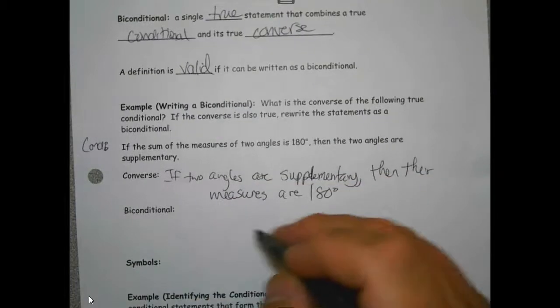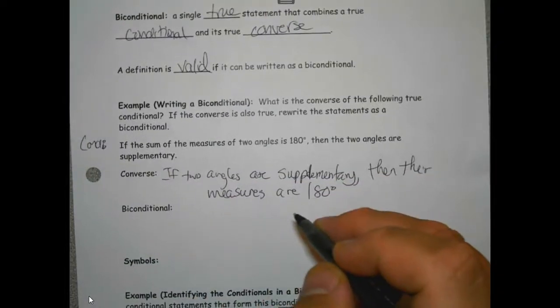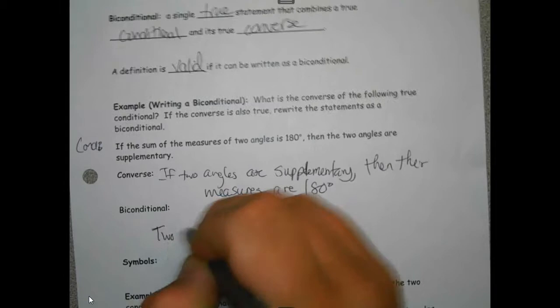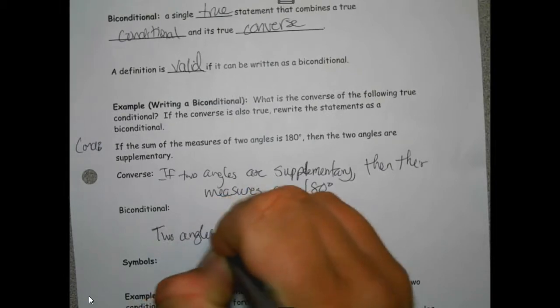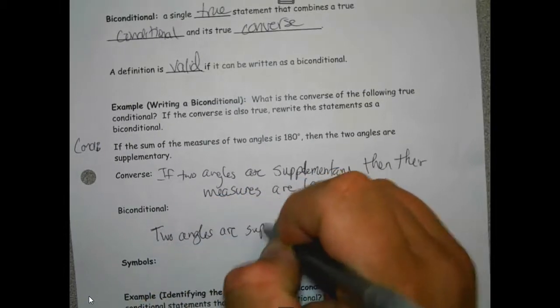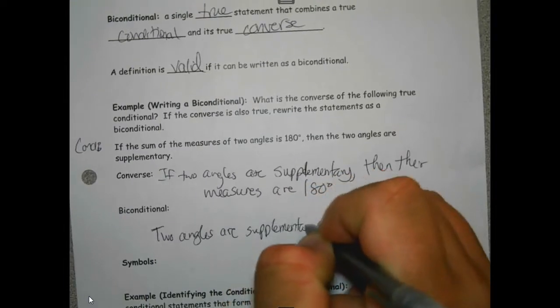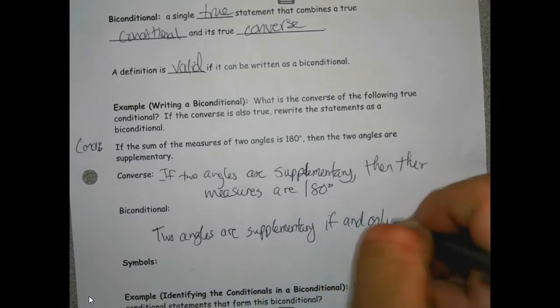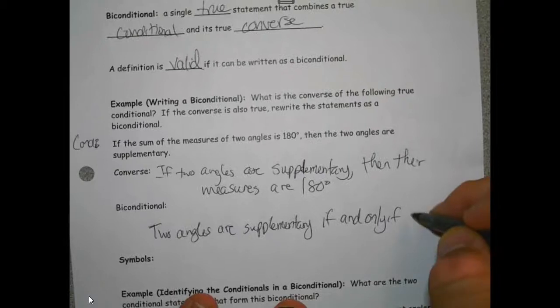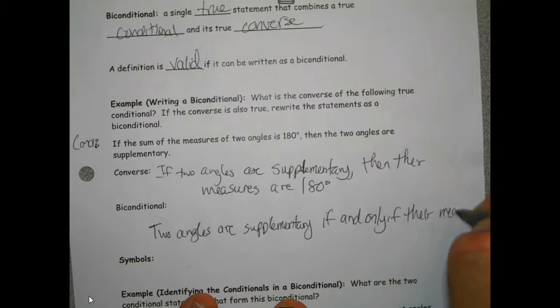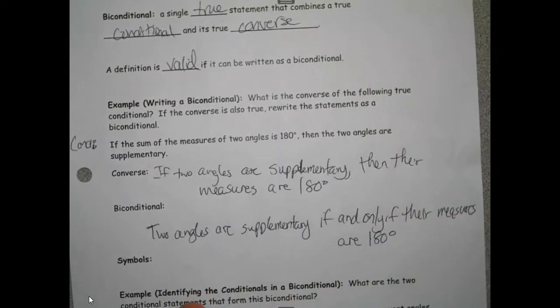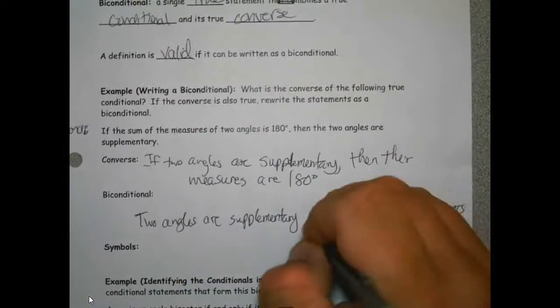So since that is true, we can write a third statement: two angles are supplementary if and only if their measures are 180 degrees.